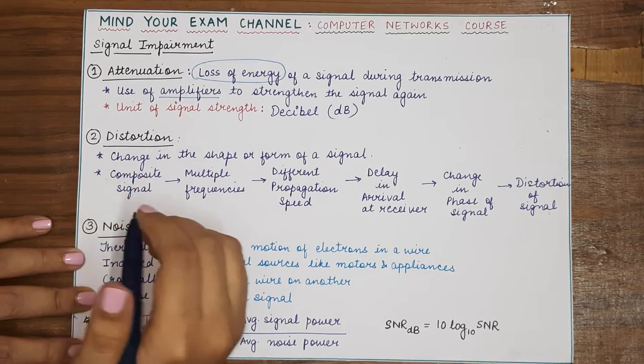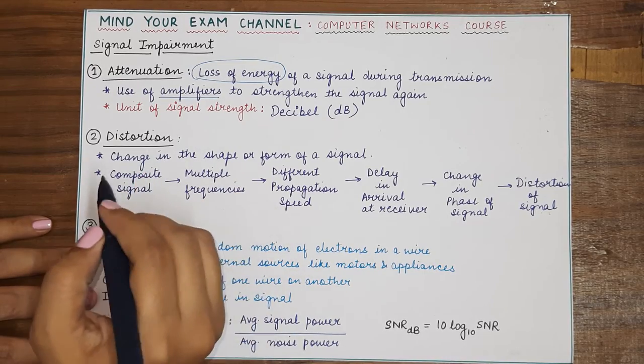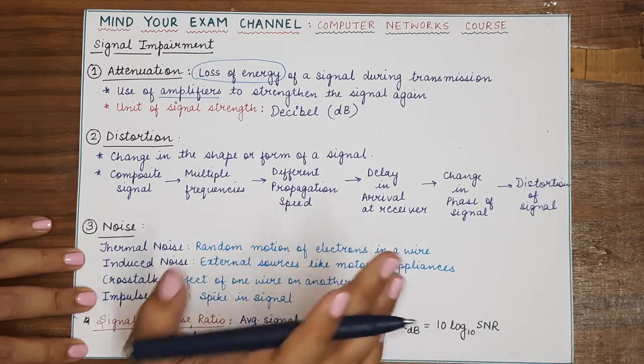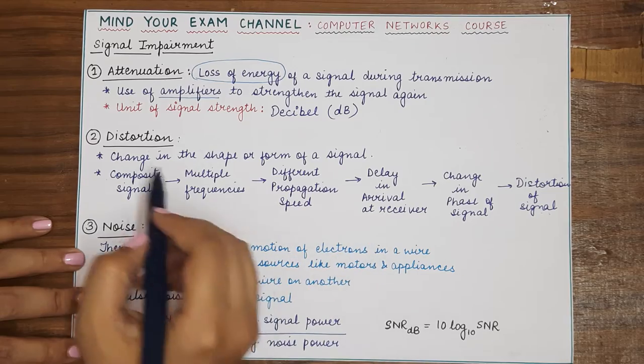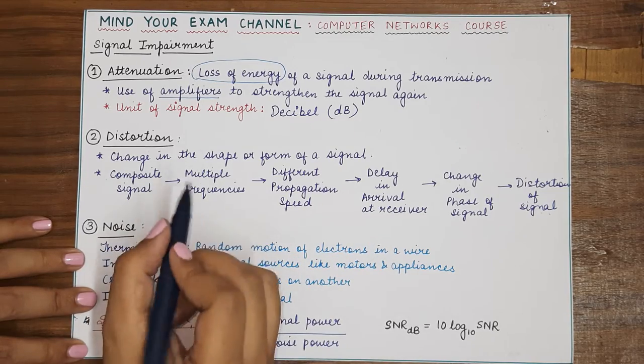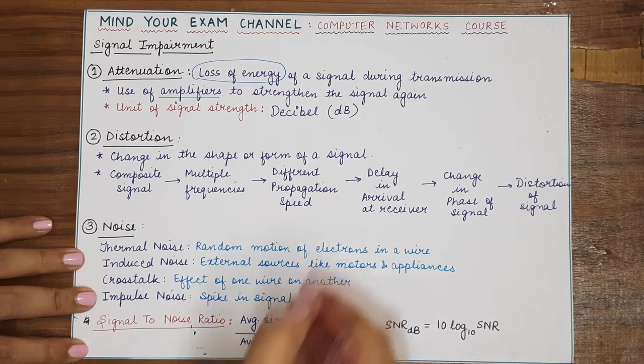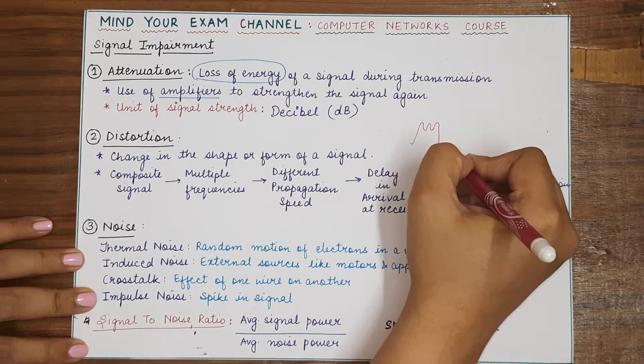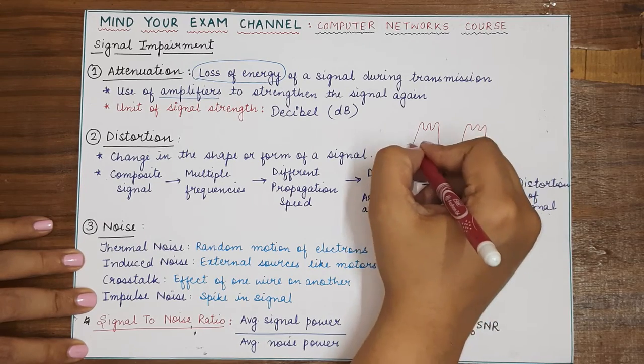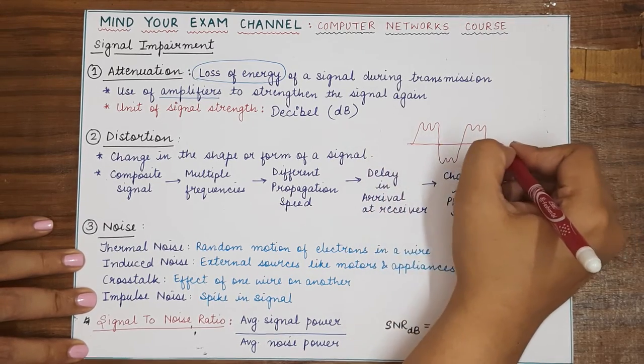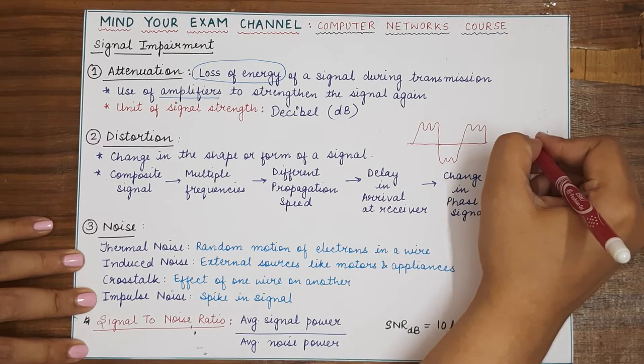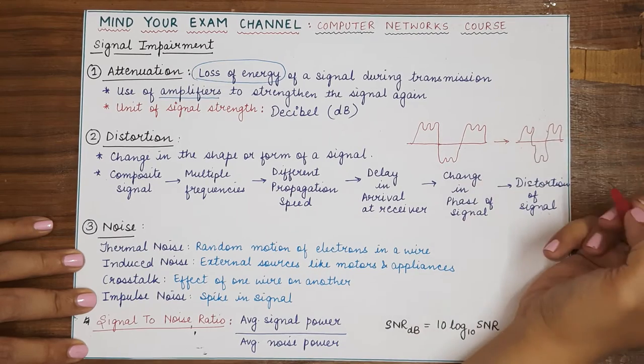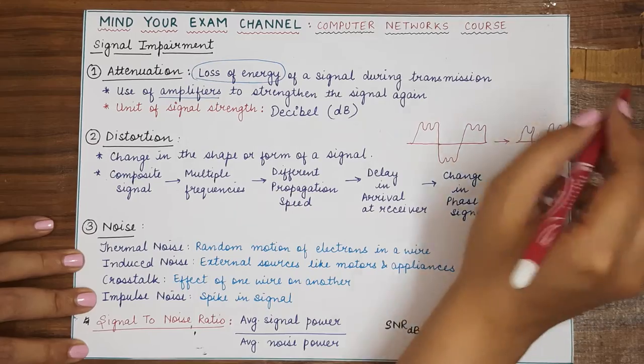So, if a signal consists of multiple frequencies and all those frequencies combined resulted into a composite signal, we have studied composite signal in the previous videos also. If that composite signal had a specific shape in the beginning, then distortion can cause that at the receiver end the signals become different because its shape has changed so we can say the signal has become distorted.